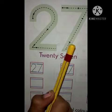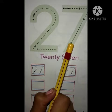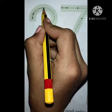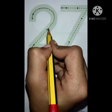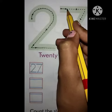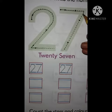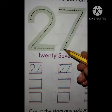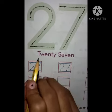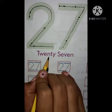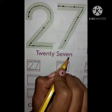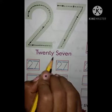Today we will write 2727. Let's start. First we will write number 2, now number 7. 2727. The number name of 27 is twenty-seven. 27.